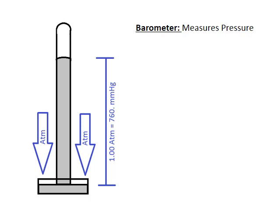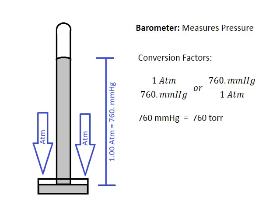Generally, the barometer is able to support one standard atmosphere of pressure. One atmosphere of pressure equals 760 millimeters of mercury, which we can use as a conversion factor. Some problems will give pressure in atmospheres, others in millimeters of mercury. There is also a unit called torr, where one torr equals one millimeter of mercury, so one standard atmosphere equals 760 torr.